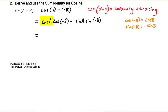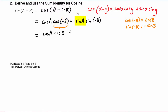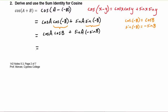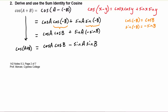Let's see what happens: we have cosine of a, then for the cosine of negative b we substitute cosine b, plus sine of a — we leave that alone — and for sine of negative b we substitute negative sine b. This simplifies to cosine a times cosine b, minus sine of a times sine of b. Bringing down cosine of a plus b, this is what's known as the sum identity for cosine.